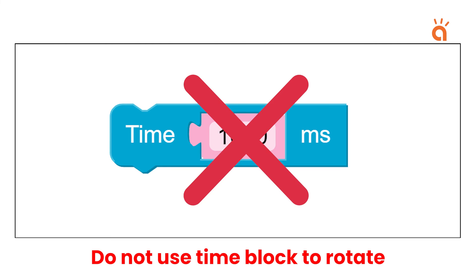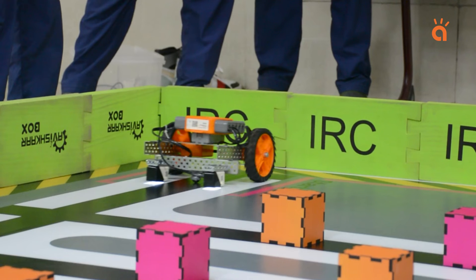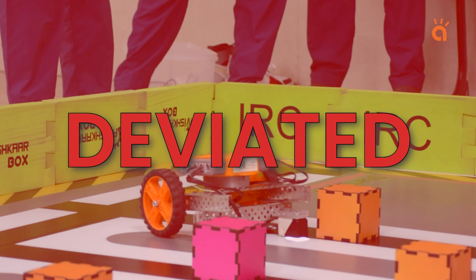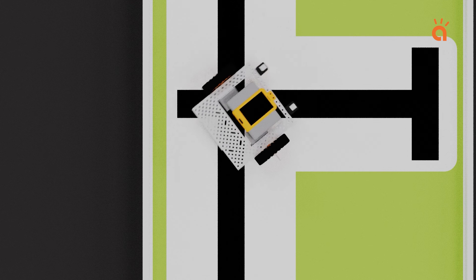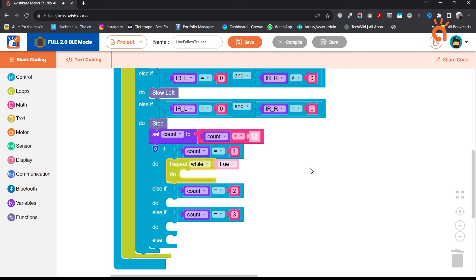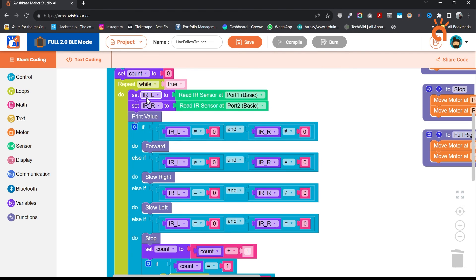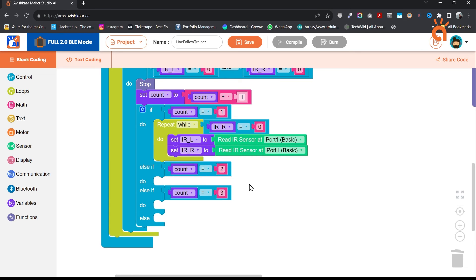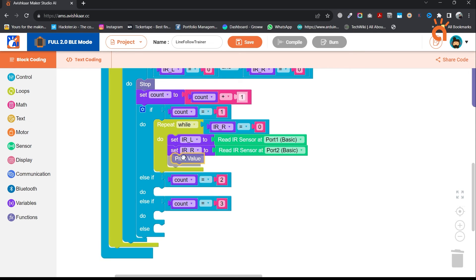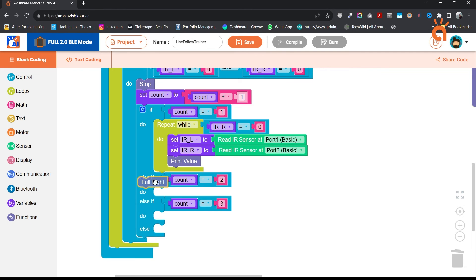Here, we will not be using a time delay to rotate our robot because time-based turns often leads to deviations. Instead, we will use sensor-based logic for our turn. The logic is very simple. Turn the robot until the right sensor detects white. We can use a repeat while loop for this. We will also need to redefine the variables to read the sensor values. Now this loop should turn the robot while the right sensor is on black. As soon as the sensor reaches white color, the turning will stop. Let's test this code.